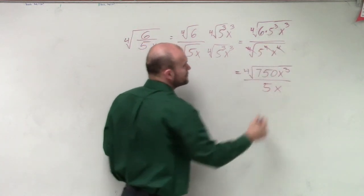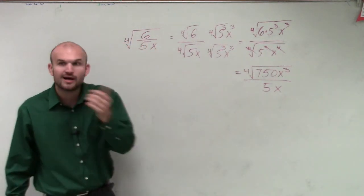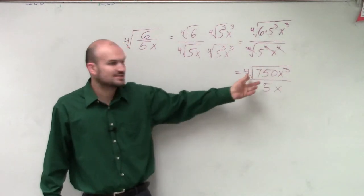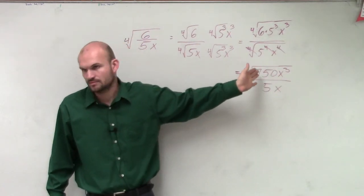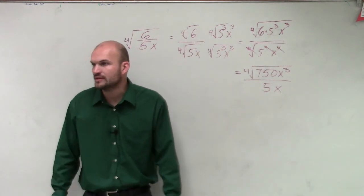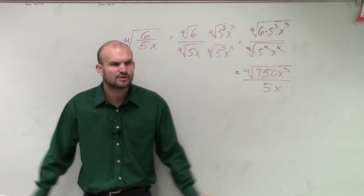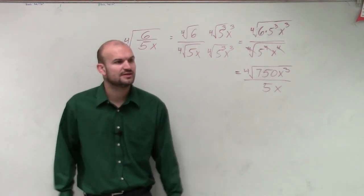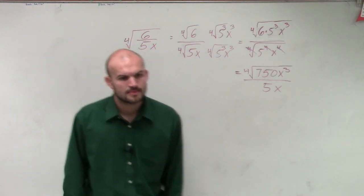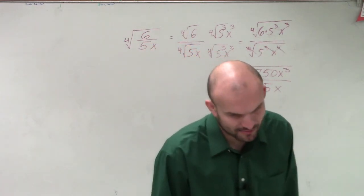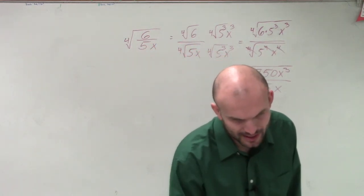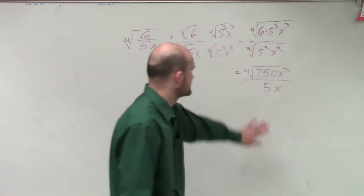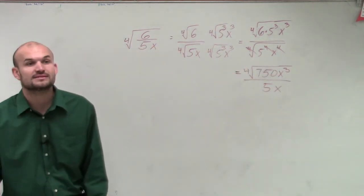So do we have a root now in our denominator? No, so it's simplified. And then we look at it, let's just double check. Can we write x cubed as raised to our fourth power evenly? No. Can we write the fourth root of 750? No. Can we simplify that though at all? Is there any fourth root, some numbers that we can divide into there to simplify it? You might want to take the fourth root of some problems. Looking at my solution that I wrote for the problem, nope. That's going to be your simplified answer.